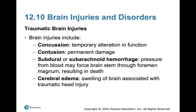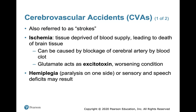Traumatic brain injuries can include a concussion, a contusion, a subdural or subarachnoid hemorrhage, and cerebral edema. Cerebrovascular accidents, CVAs, also known as strokes, involve ischemia — tissue deprived of blood supply usually leading to death of brain tissue. This can be caused by a blockage of a cerebral artery by a blood clot, and glutamate can act as an excitotoxin, which can worsen the condition.